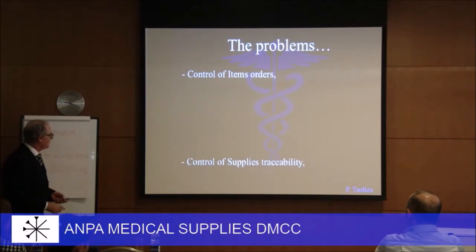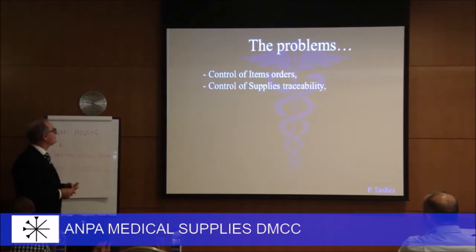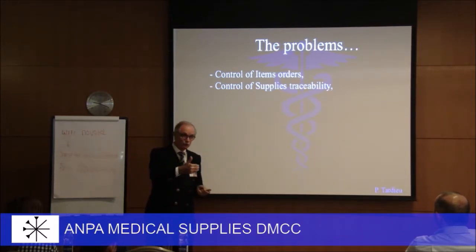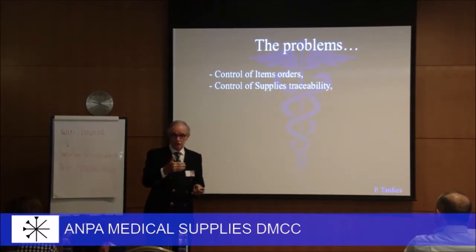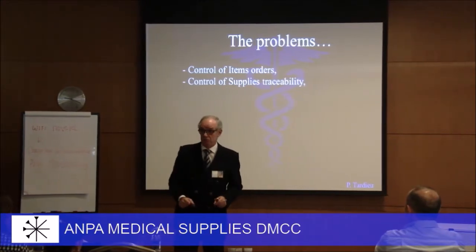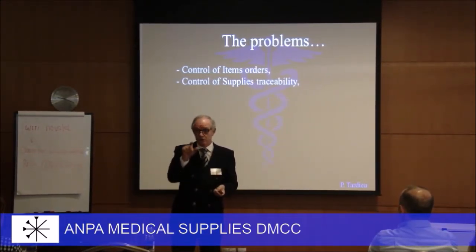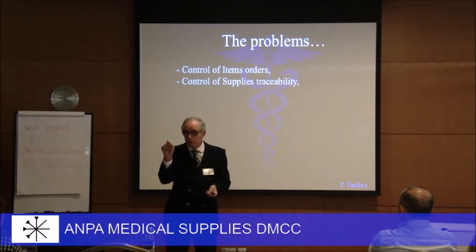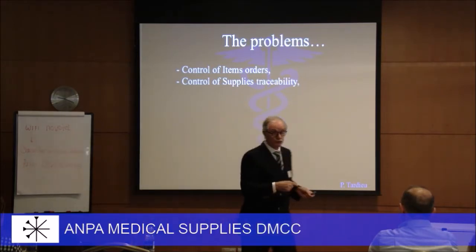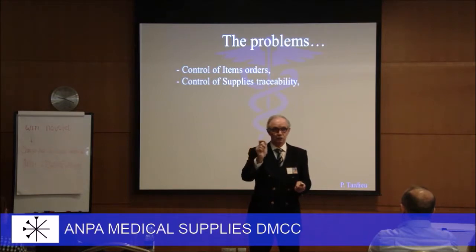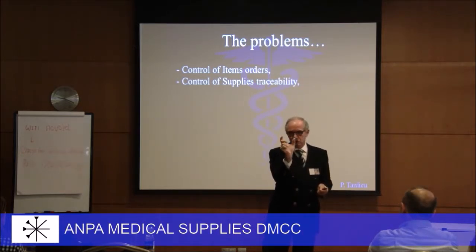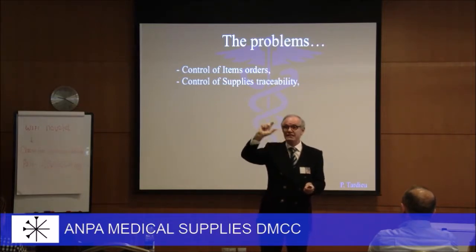In all medical practices you need traceability of supplies — you need to know when items came into your stock, the tracking number, the lot number, the expiry date. How do you do that now? Maybe you don't, but medically and legally you have to. Today you don't need to write all that manually anymore. The solution is simply to scan what we call a QR code. It is a unique reference to an item, and you will easily find it in your stock by scanning again.